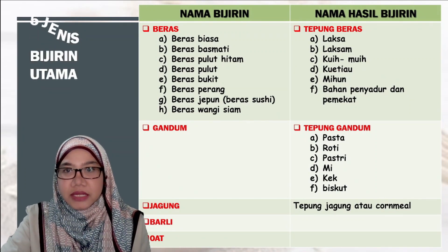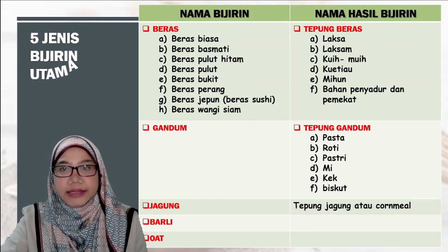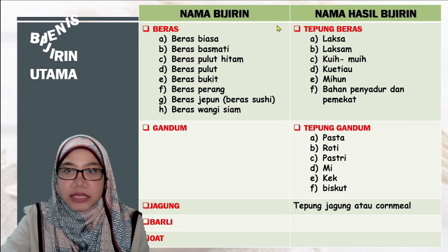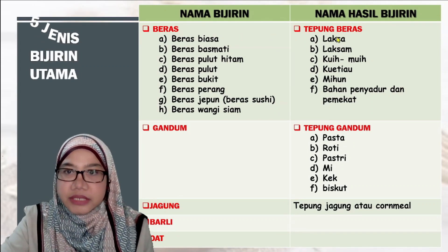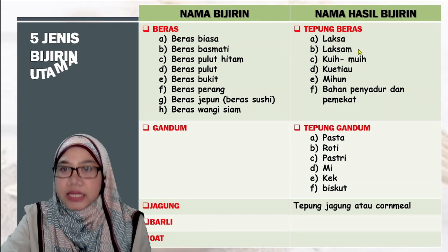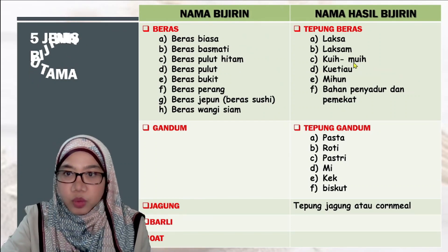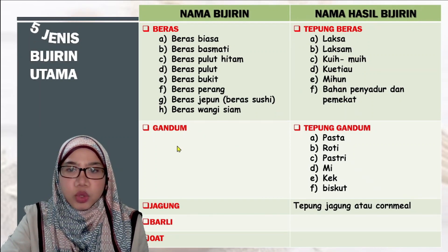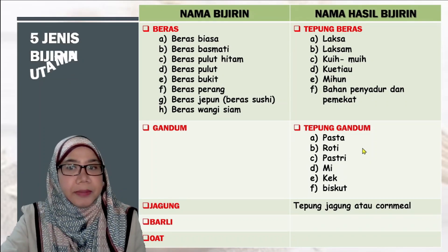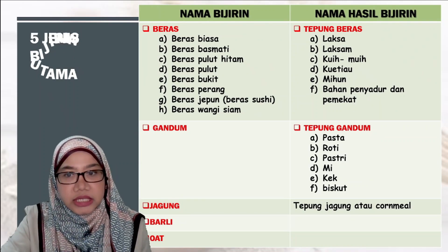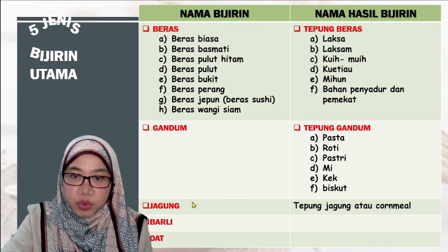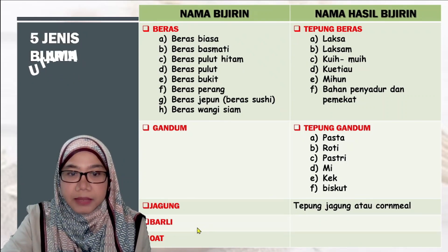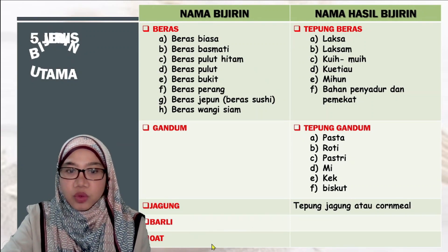Berikut adalah ringkasan bijirin dan hasil bijirin. Beras menghasilkan tepung beras, dan daripada tepung beras kita dapat membuat laksa, laksam, kuih muih, kuih tiaw, bihun dan bahan penyadu. Gandum menghasilkan tepung gandum, dan daripadanya kita boleh menghasilkan pasta, roti, pastry, mie, kek dan biskut. Jagung menghasilkan tepung jagung atau cornmeal. Barli dan oat biasanya dimakan terus tanpa proses menjadi tepung.